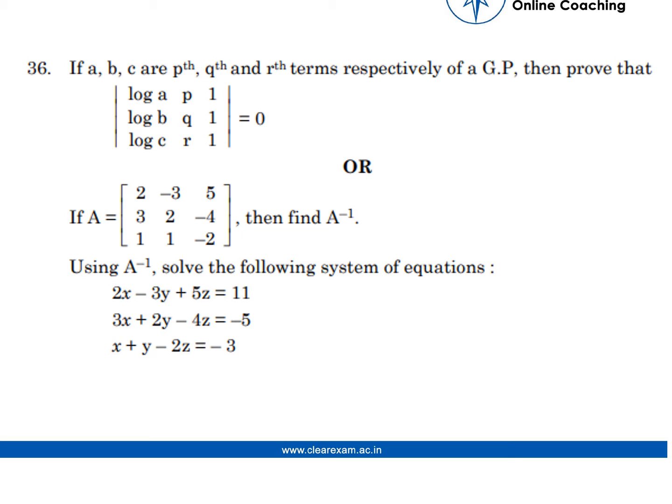The OR part of the same question is: if A is equal to the matrix [2, -3, 5; 3, 2, -4; 1, 1, -2], then find A inverse, and using A inverse solve the following system of equations.